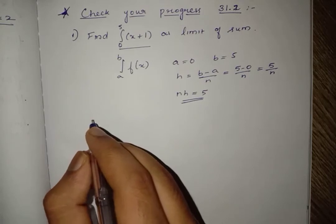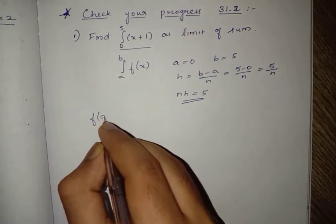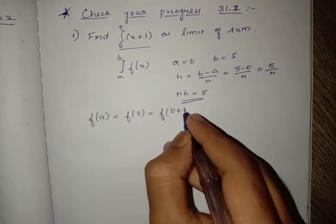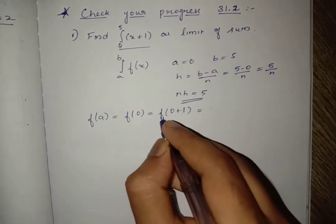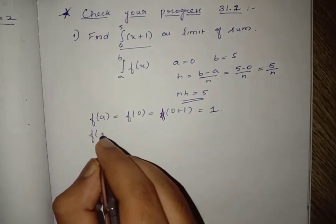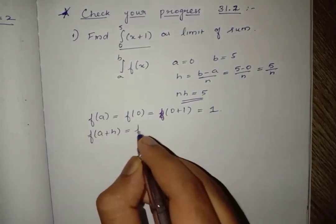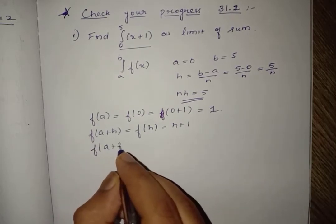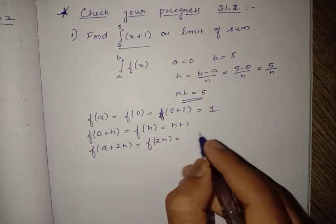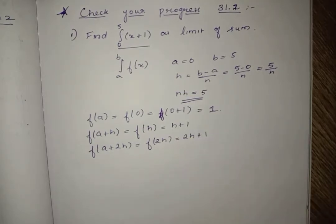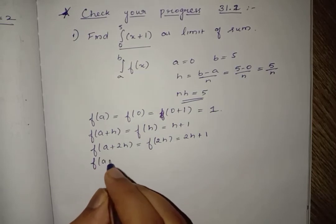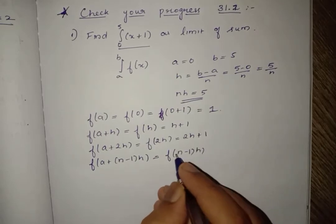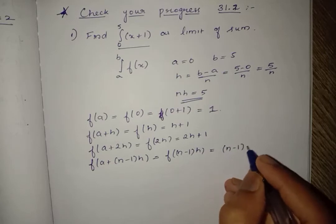Now let us calculate the values: f(a) = f(0) = 0 + 1 = 1. f(a + h) = f(h) = h + 1. f(a + 2h) = f(2h) = 2h + 1. And f(a + (n-1)h) = f((n-1)h) = (n-1)h + 1.